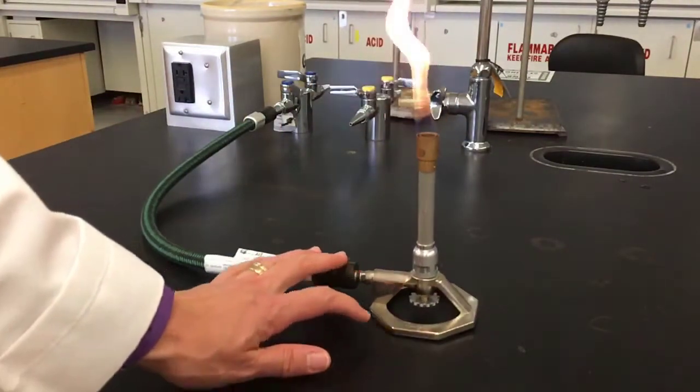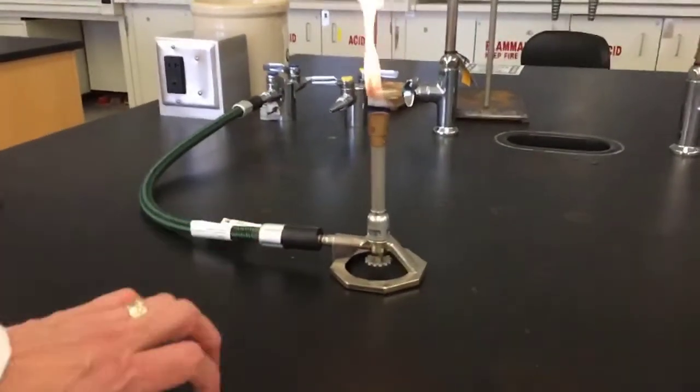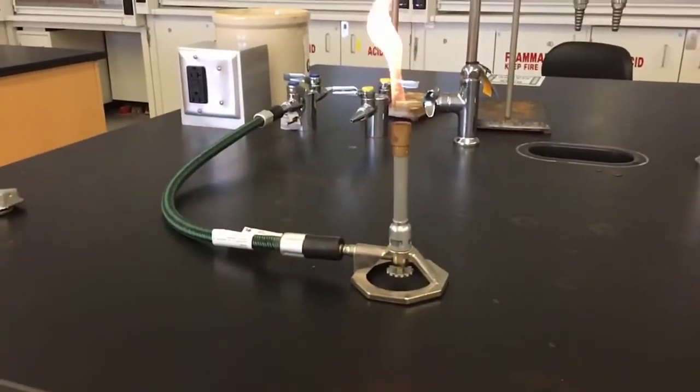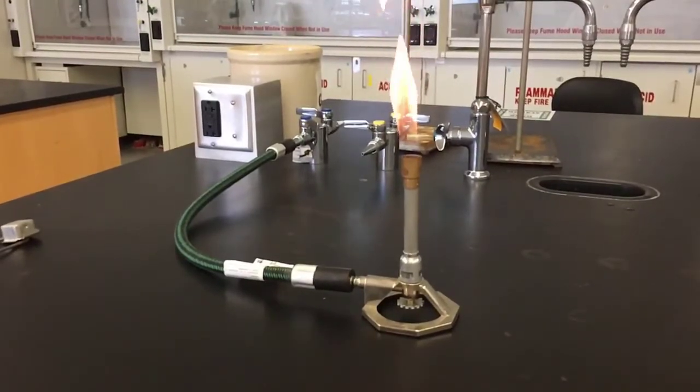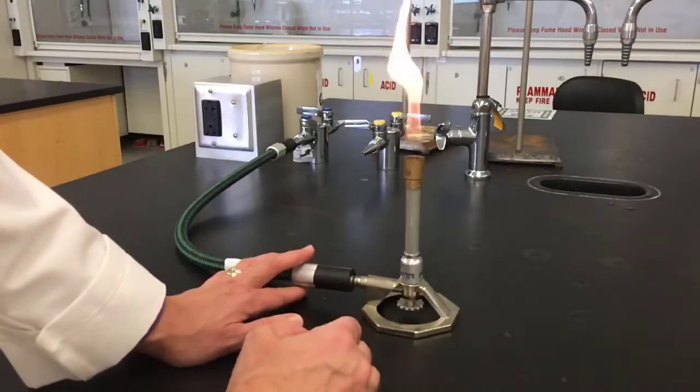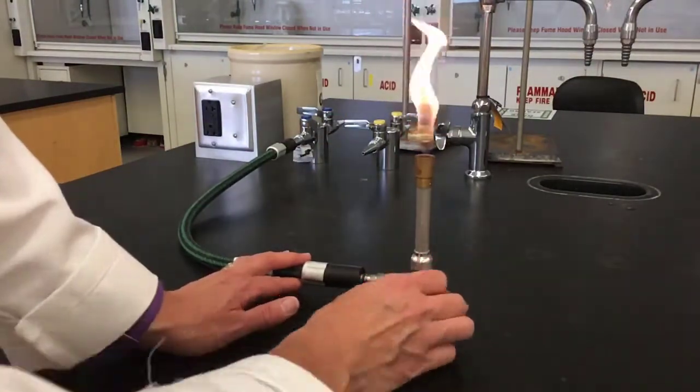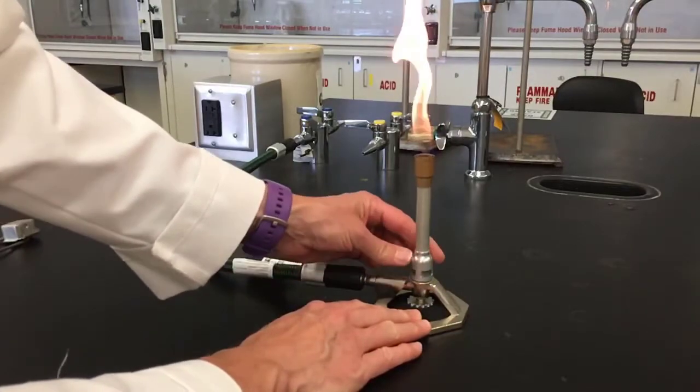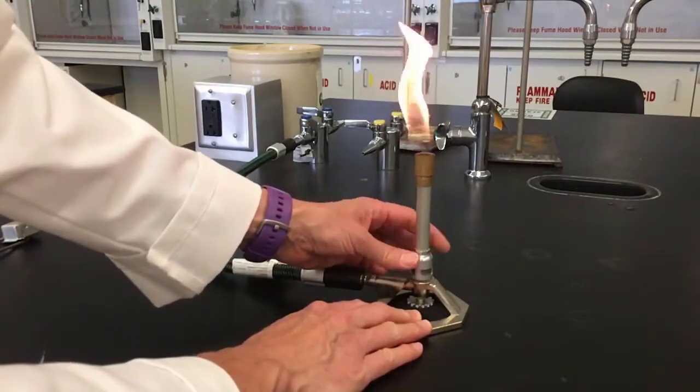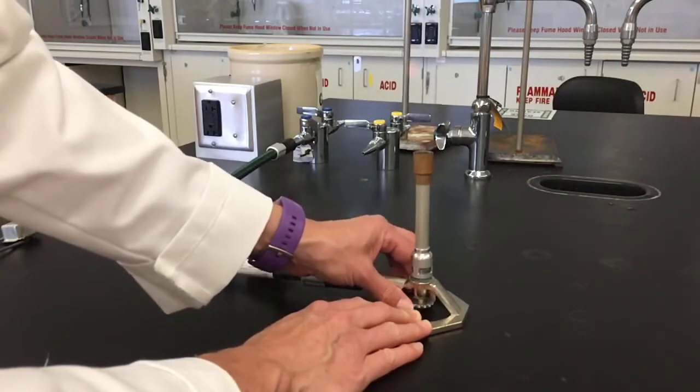Right now we have a luminous flame and we haven't added air. I need to add air to get a non-luminous flame. So I'm going to open up the air vent by twisting the barrel to get enough air.